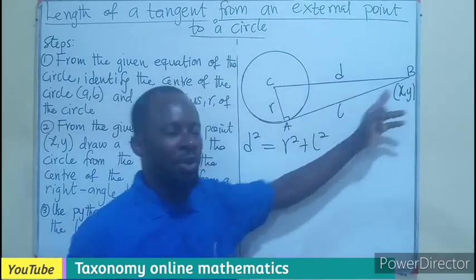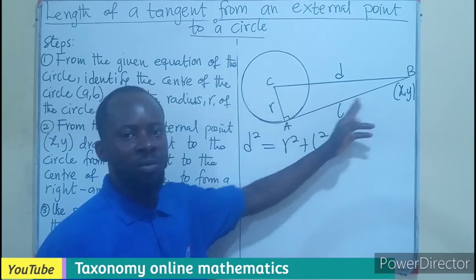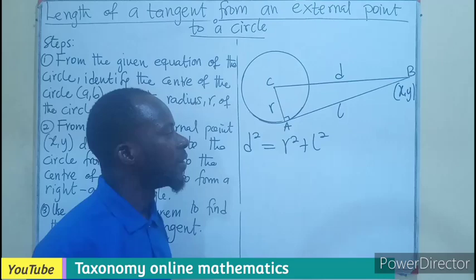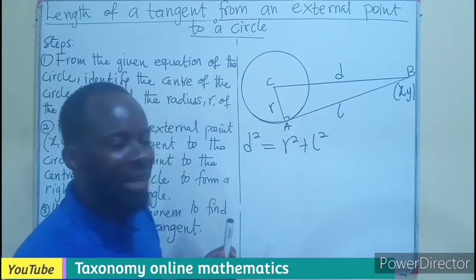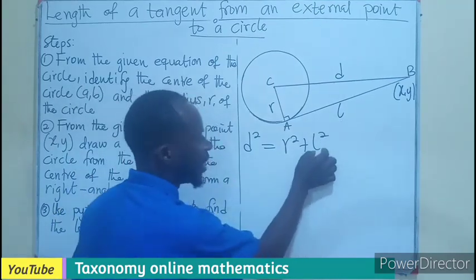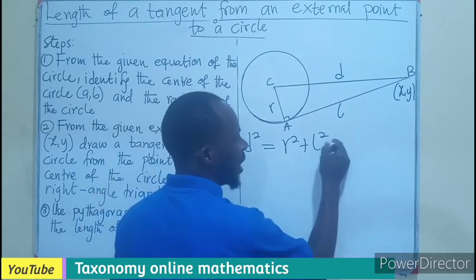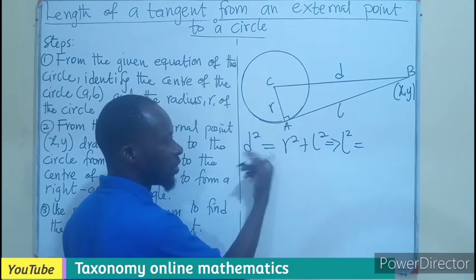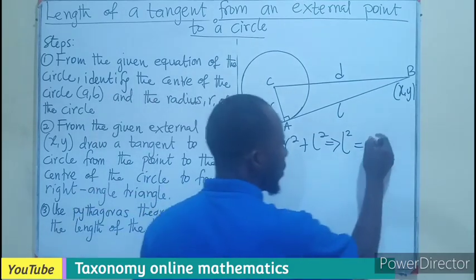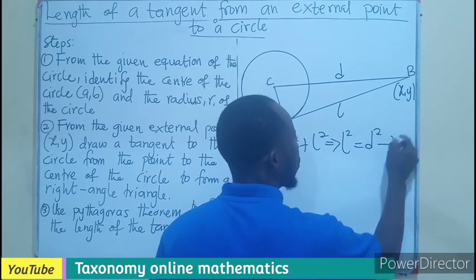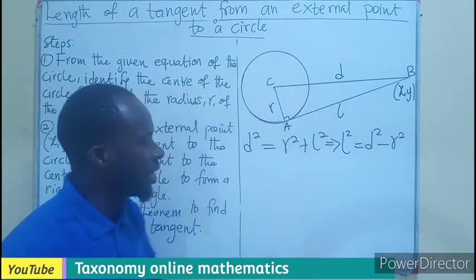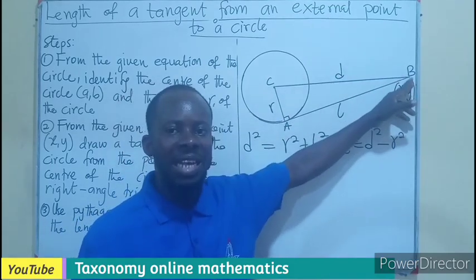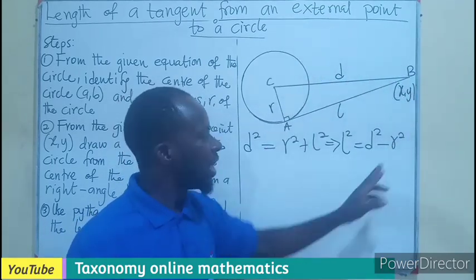The hypotenuse squared equals the sum of the two shorter sides, which would be the opposite and the adjacent. But we are paying attention to the length. So let's make the length the subject. That simply means that L squared will be equal to D squared minus R squared. So the moment I know the distance between these two points, center and the external source, and the radius.